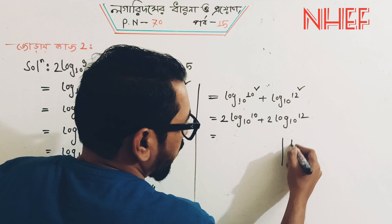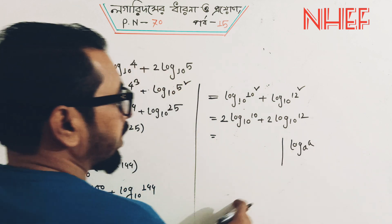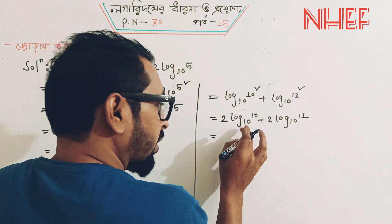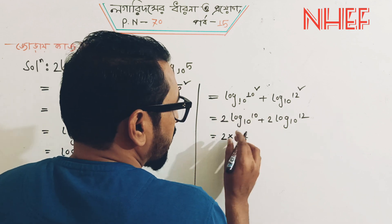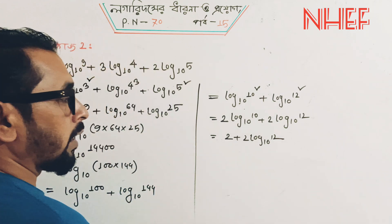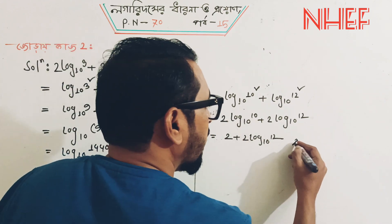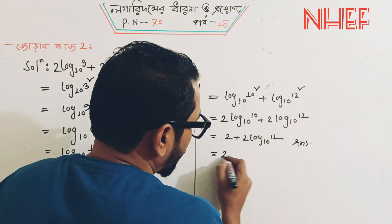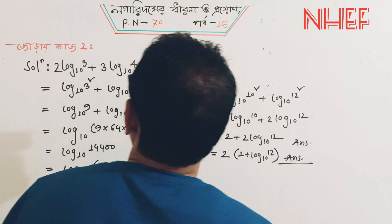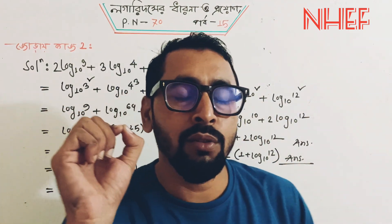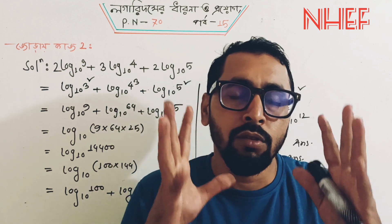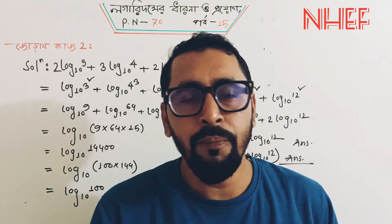Log A squared, so log base a of a equals 1. So log 10 base 10 equals 1, and log 10 base 12 gives us 2 times 1 plus log base 12, which is 2. That is the solution. You can see the answer clearly. Now the class is going to start a new problem. Thank you very much, God bless you.